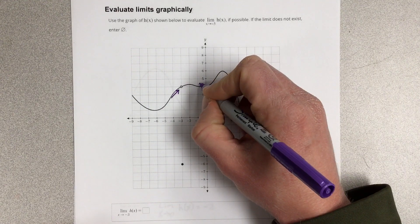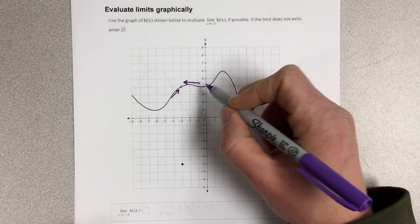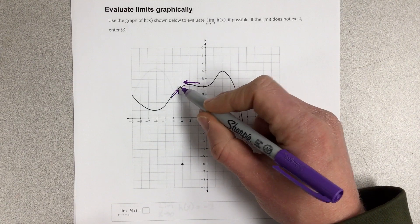And as we approach from the right, we're getting a y value of 4. We're approaching this y value of 4.